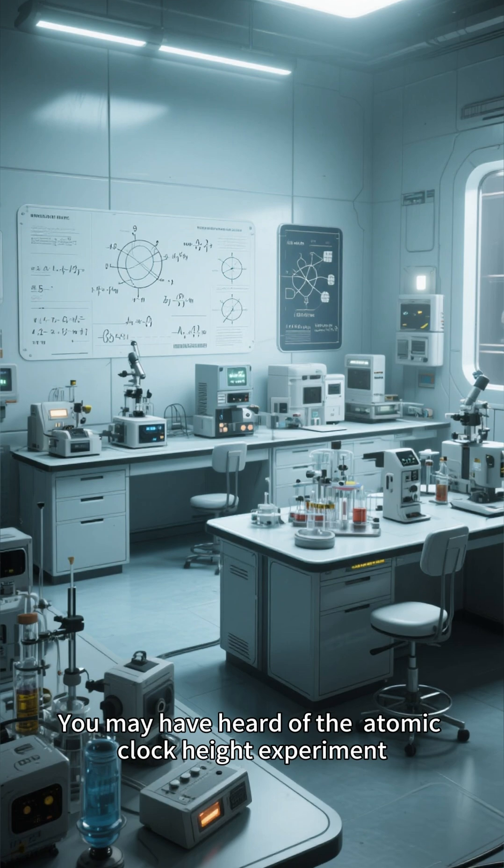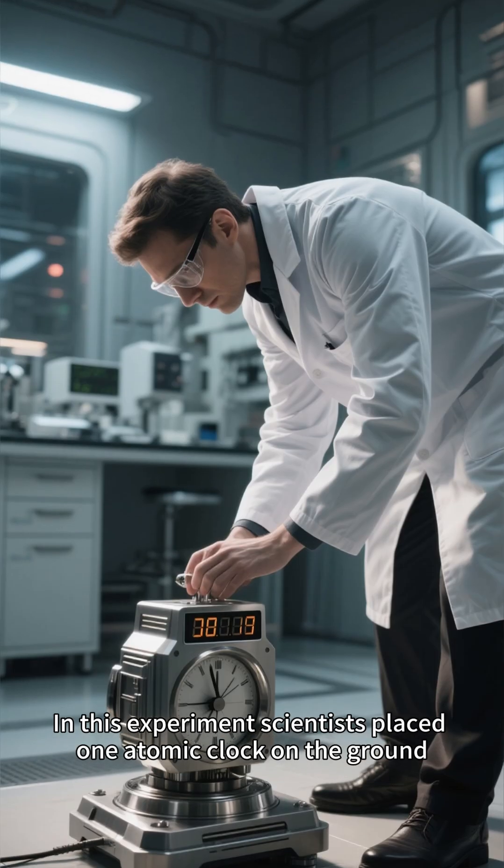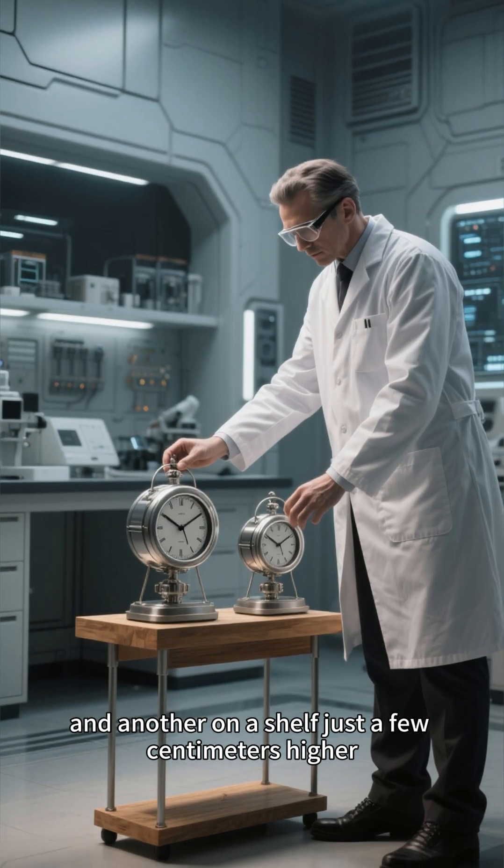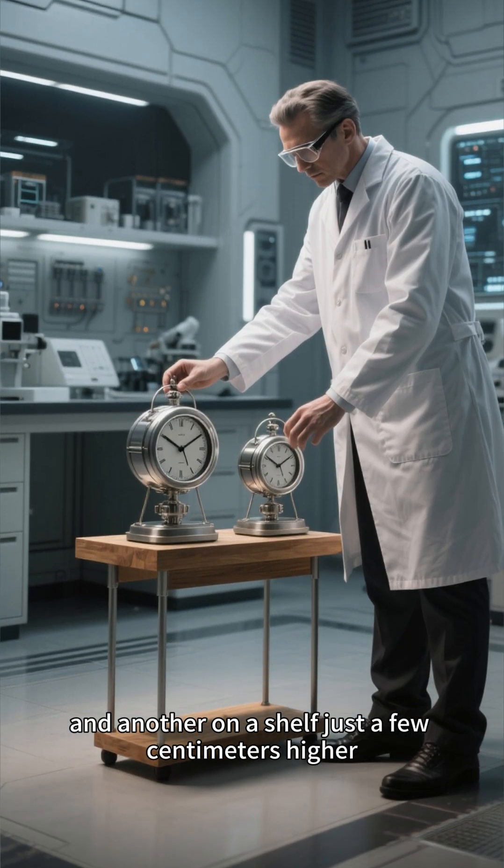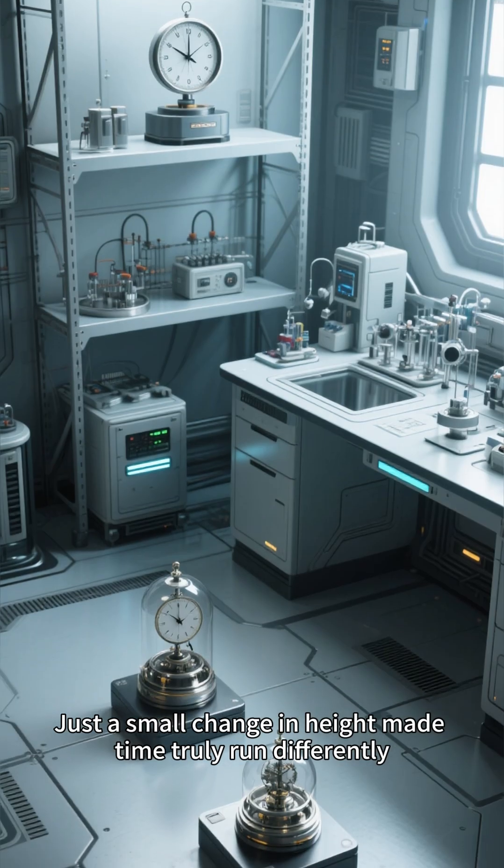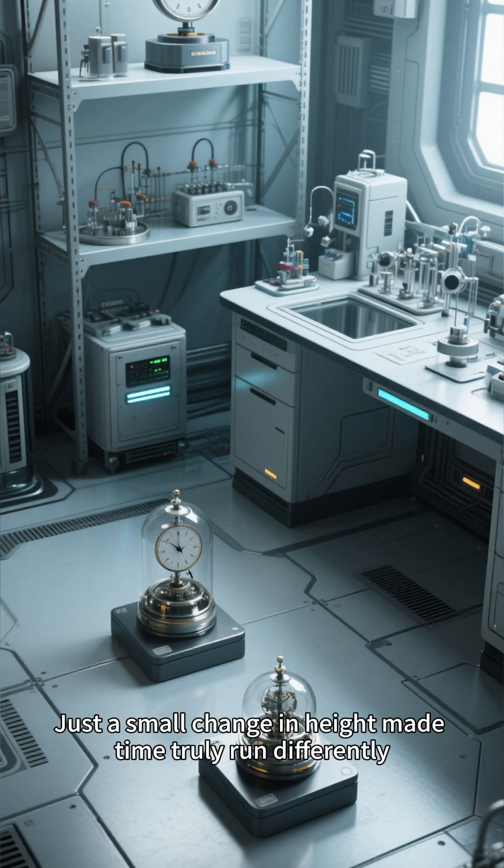You may have heard of the Atomic Clock Height Experiment. In this experiment, scientists placed one atomic clock on the ground, and another on a shelf just a few centimeters higher. The result? The clock on the shelf ran faster. Just a small change in height made time truly run differently.